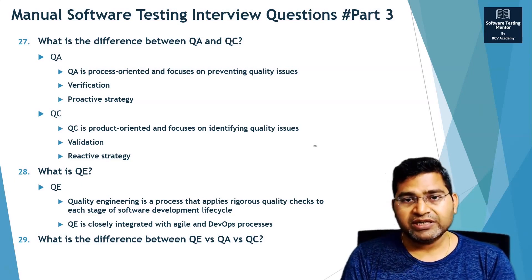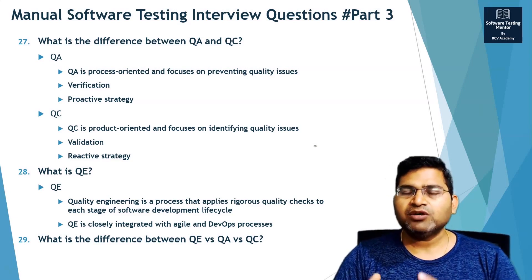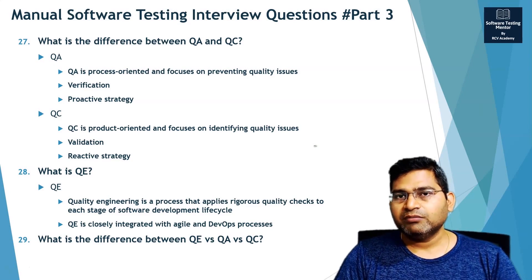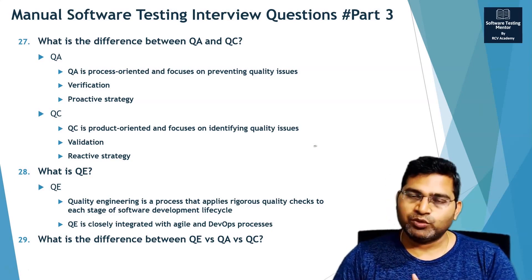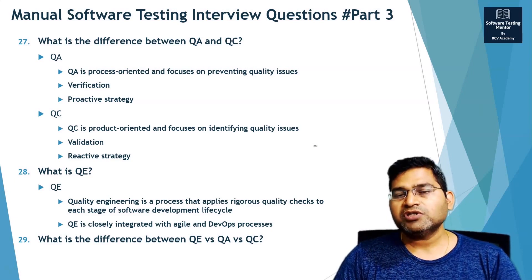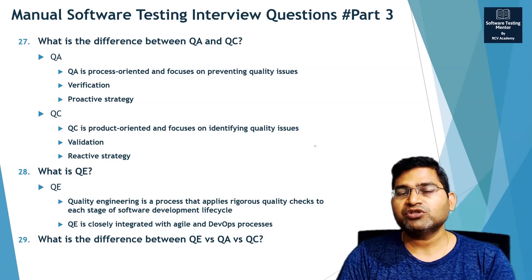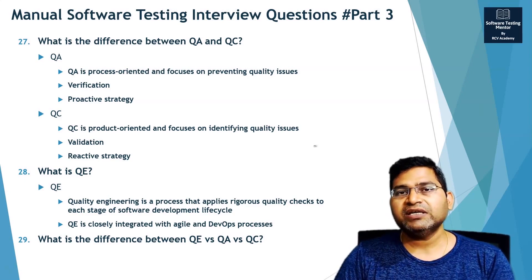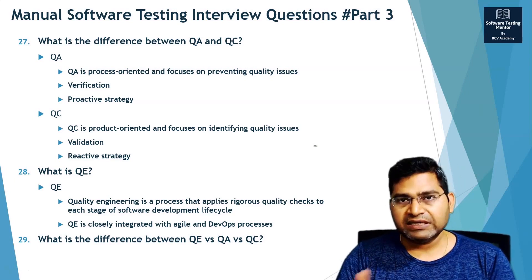QA is again process-oriented, but it focuses more on preventing quality issues. QE can be considered the advanced form or latest terminology for QA. QA was mostly in picture when the V-model and waterfall software development approaches were there, to ensure that any process-related issues are fixed.